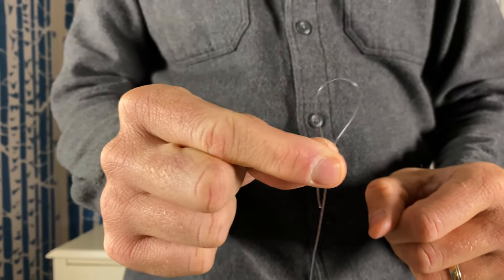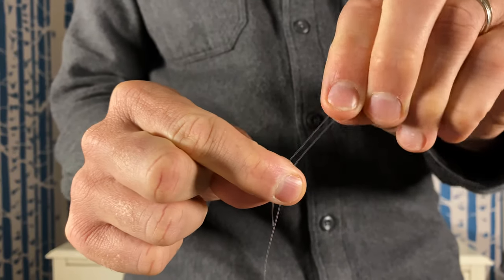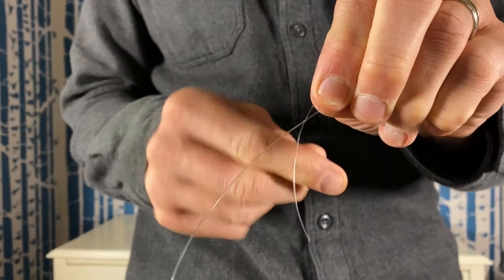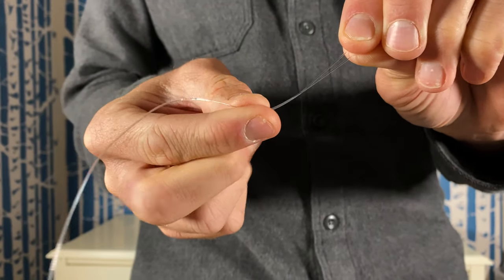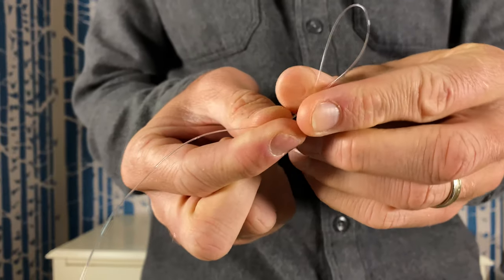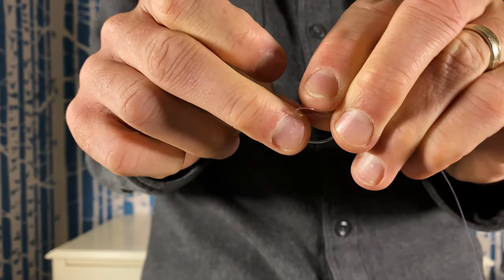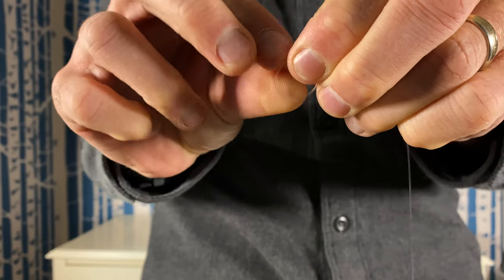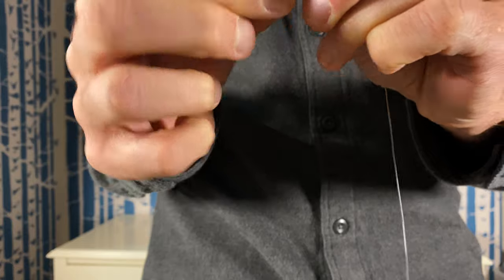Just to make a small loop - this loop is going to be the working end, the part that moves. I pinch the line where the long piece and the tag end are, and I take that loop and I make an overhand knot and I go through that loop twice.